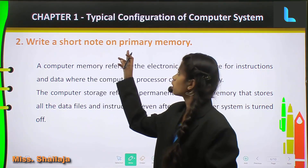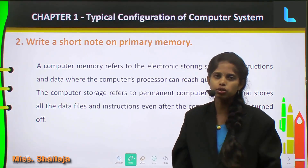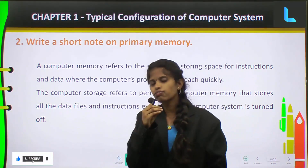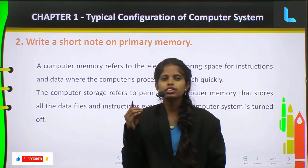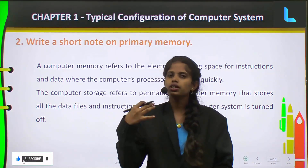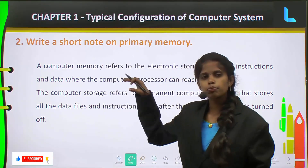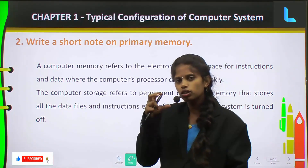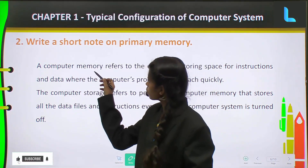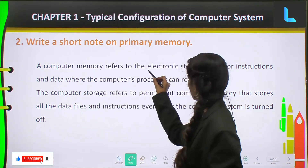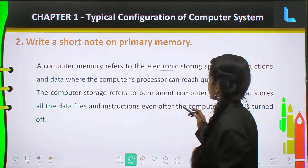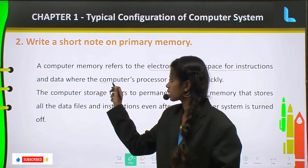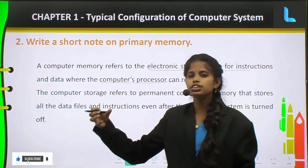Write a short note on primary memory. First we will understand what is memory — just a brief introduction of memory, means what is memory in a computer. A computer memory refers to the electronic storing space for instructions and data where the computer's processor can reach out